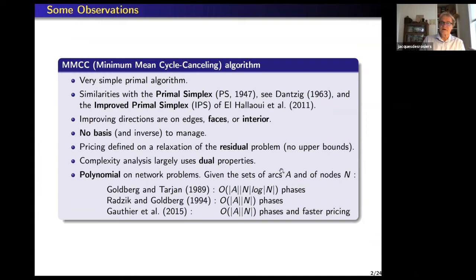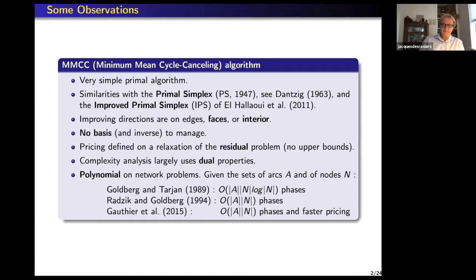We delete the upper bounds when we find the direction. Complexity analysis largely uses the dual properties, so it is polynomial on network problems. Given a set of arcs A and nodes N, the first paper has a result of order A·log(N) phases. Five years later, Goldberg and a student Radzik found order A·N phases. And in his thesis, Jean-Bertrand Gauthier found the same number of phases but a much faster pricing problem.